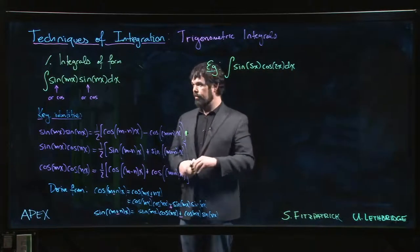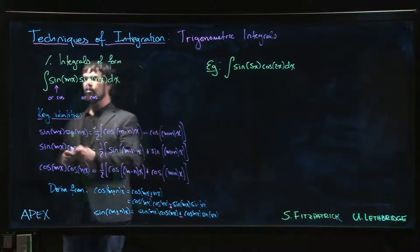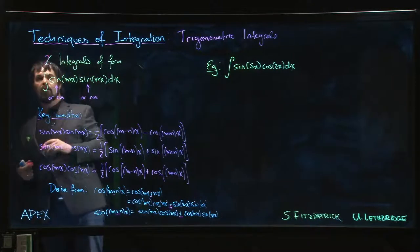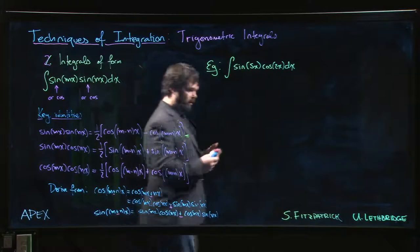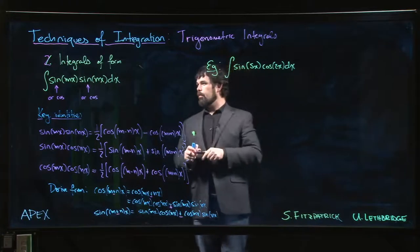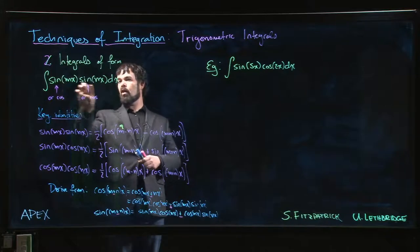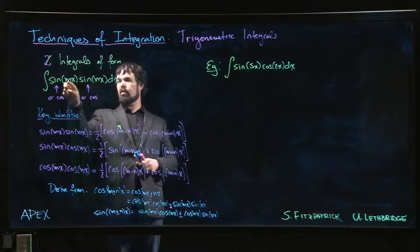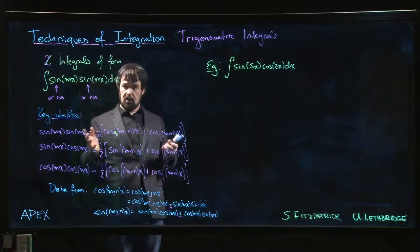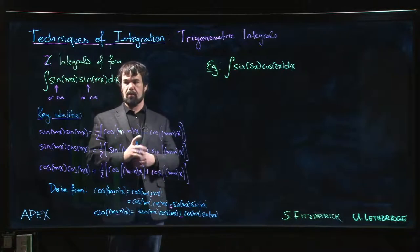Here's the next type of integral that we might consider—I guess this is section 2. These are integrals of the form: it's going to be either sine or cosine in each of these, but we have just some multiple of X, possibly two different multiples of X, because if they're the same you combine them.